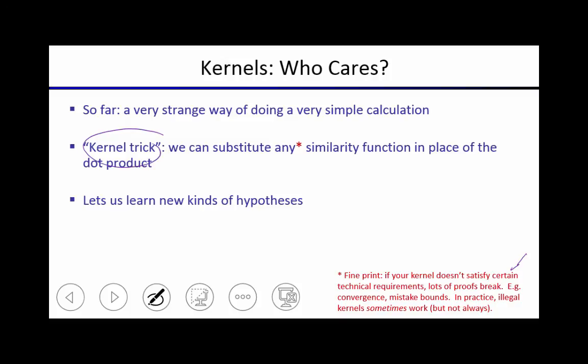So now we can learn new kinds of hypotheses, because we're not restricted to first choose a feature vector, and then in a product. We can just use a kernel function straight up, run the dual perceptron, never worrying about feature vectors, and effectively...